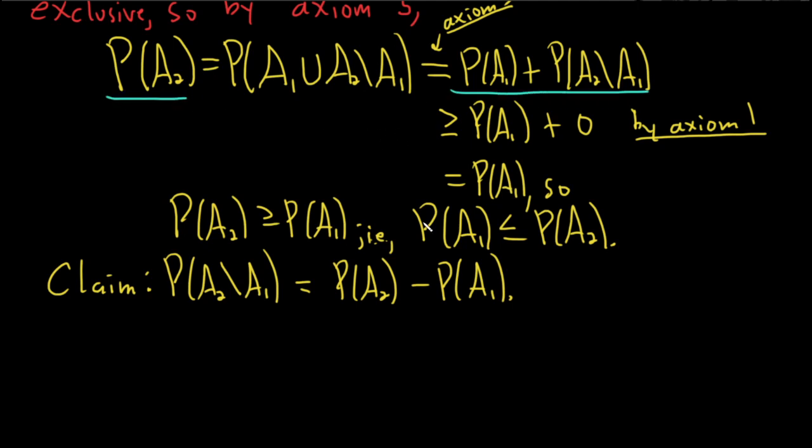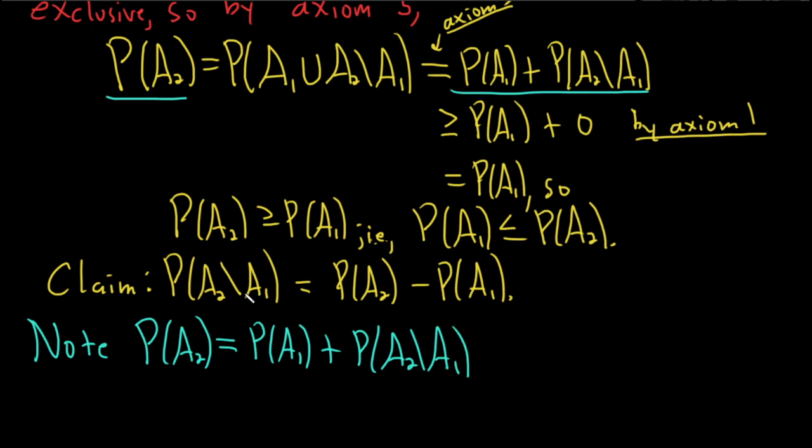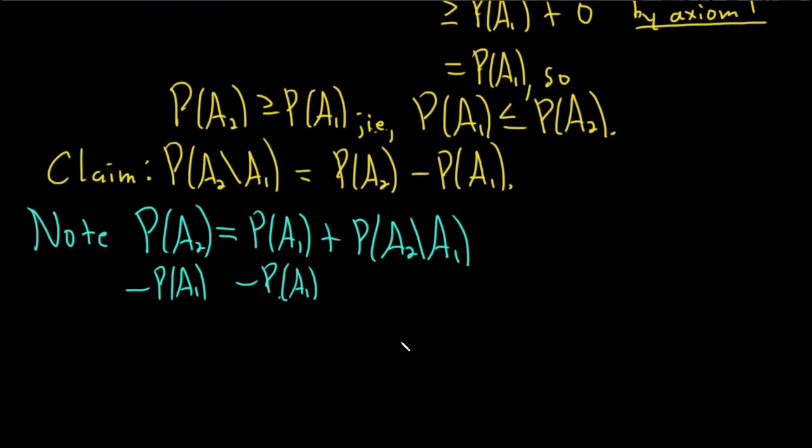We have P of A2 is equal to this. So note, P of A sub 2 is equal to the probability of A sub 1 plus the probability of A sub 2 sub minus A sub 1. So to get this equation that we need, we just need to get rid of P of A sub 1. So just subtract it from both sides.